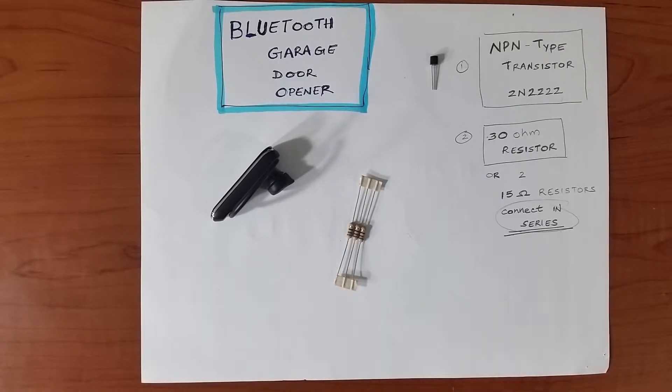So the first thing you need for this project is an NPN type transistor. Make sure you get the 2N2222 type transistor. It's the one right here, it's a three-pinned one. And when you get it, just make sure you see the same letters and characters on the flat side of it.